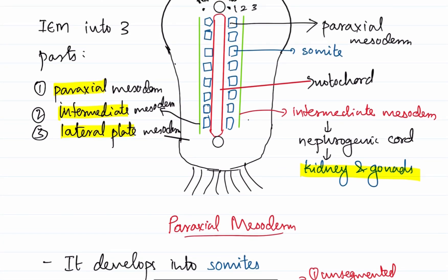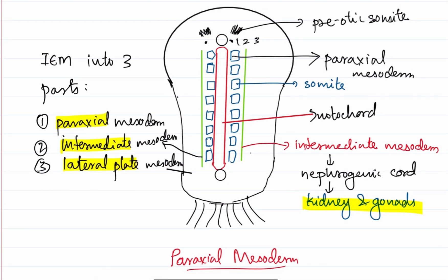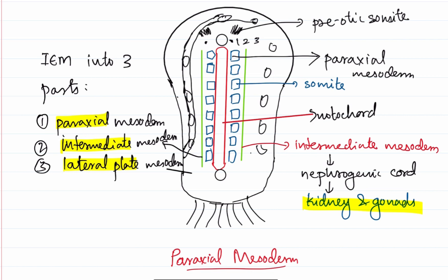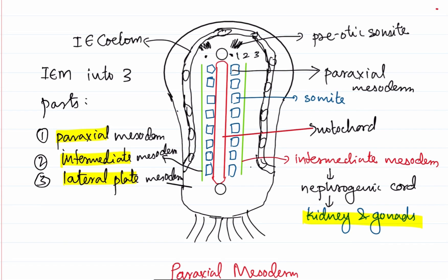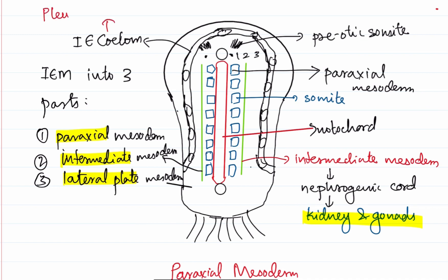Now coming finally to the lateral plate mesoderm. What happens is that lacunae will start to appear all over in the lateral plate mesoderm. These lacunar spaces will actually fuse to form a coelom — just like when we discussed about the extraembryonic mesoderm, the lacunar spaces coalesced to form an extraembryonic coelom. In a similar way, the same process happens in the intraembryonic mesoderm and that will lead to the formation of the intraembryonic coelom. This intraembryonic coelom develops into the pleuro-pericardial-peritoneal canal, giving rise to the pleural cavity, the pericardial cavity, and the peritoneal cavity.